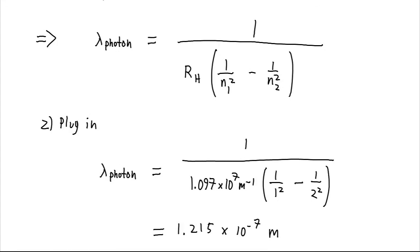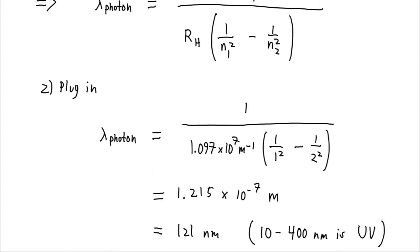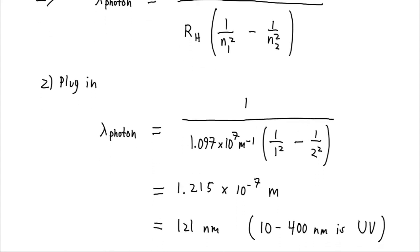And we've got to take 1 over that whole quantity. And we get 1.215 times 10 to the negative 7 meters, which is 121 nanometers. And this falls in the UV spectrum. UV is everything from 10 nanometers up to 400 nanometers.